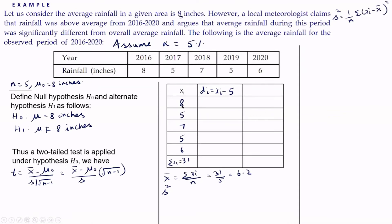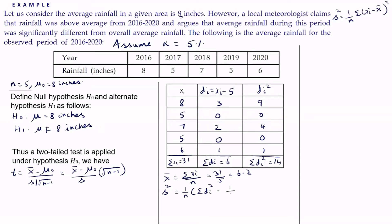So we compute dᵢ: 8−5 = 3, 5−5 = 0, 7−5 = 2, 5−5 = 0, 6−5 = 1. So Σdᵢ = 6. Next we calculate dᵢ²: 9, 0, 4, 0, 1. So Σdᵢ² = 14. Having known all these we can find the sample variance using the formula s² = (1/n) × Σdᵢ² − (1/n × Σdᵢ)².